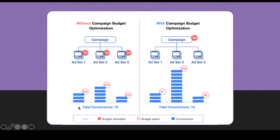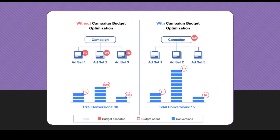Down below we can see the performance. Each ad set spent $10, and the conversions are shown by the bars associated. Ad set one got three conversions, ad set two got five, and ad set three got two conversions, for a total of 10 conversions. Campaign budget optimization shifts the budget away from the ad set level up to the campaign level, like most other advertising platforms such as Google Ads and Microsoft Ads.